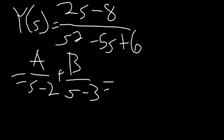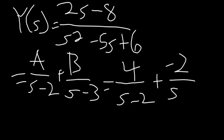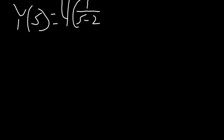When we solve for A and B, A equals 4 and B equals negative 2. Therefore, Y(s) equals 4 times 1 over s minus 2 minus 2 times 1 over s minus 3.